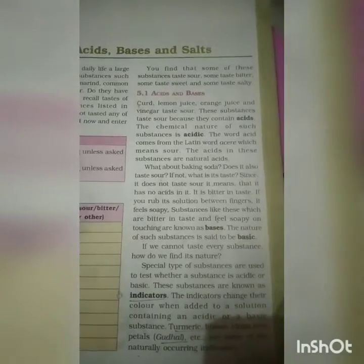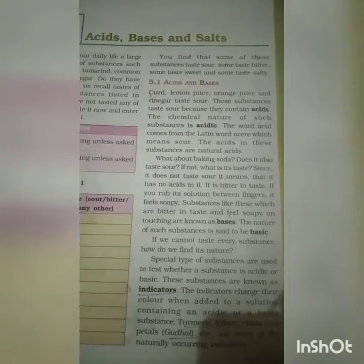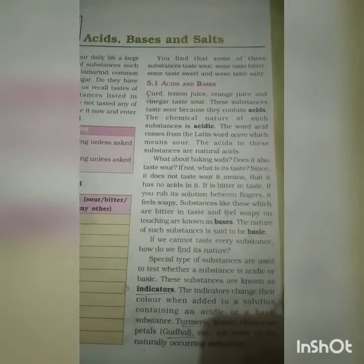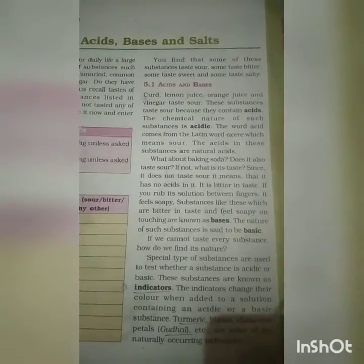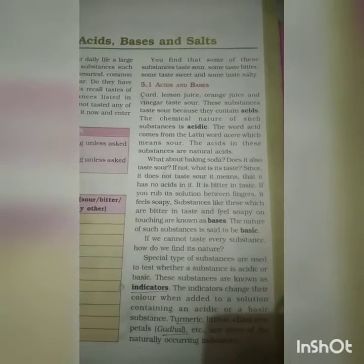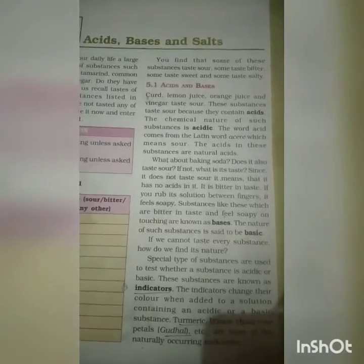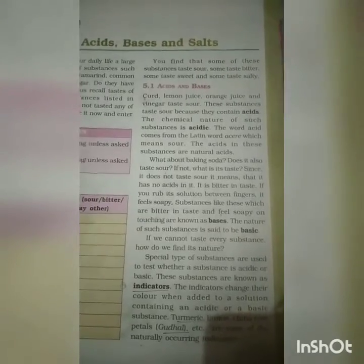Natural indicators: some indicators that occur in nature are called natural indicators. For example, turmeric, China Rose petals, litmus, etc. The most commonly used natural indicator is litmus.